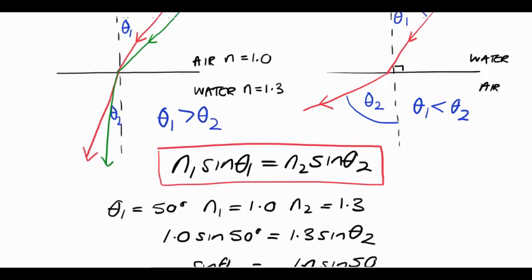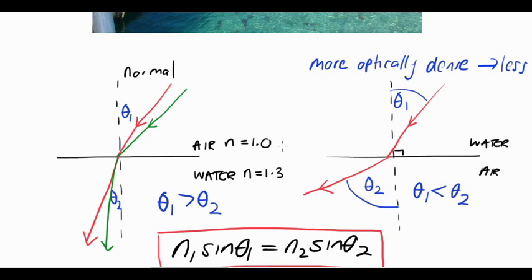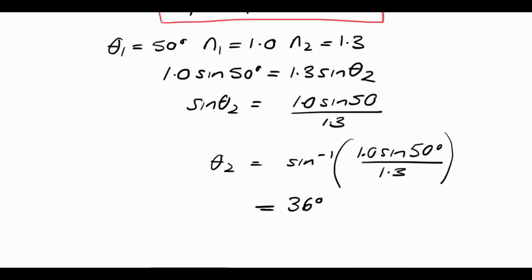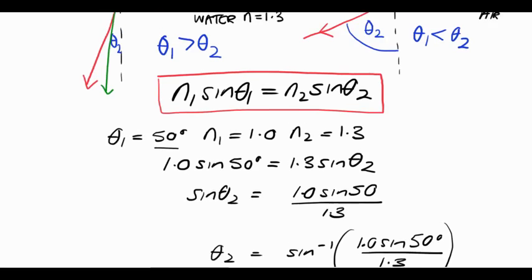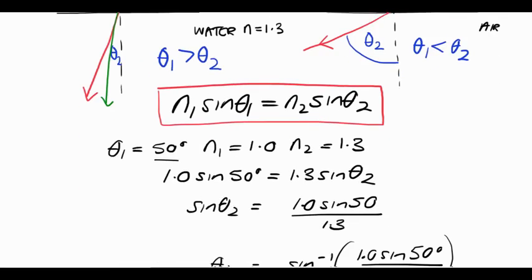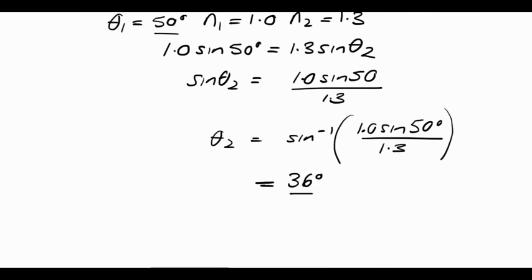Looking back at the definition, if we're going from an optically less dense medium to an optically more dense medium, the light ray slows down and bends towards the normal, which means the angle of refraction should be less than the angle of incidence. Checking our answer: the angle of incidence was 50 degrees and the angle of refraction is 36 degrees, so we know we're on the right track. Snell's Law can also be used to work out the angle of refraction going from an optically more dense medium into a less dense medium — you use the formula exactly the same way. Those are the basic ideas behind refraction.